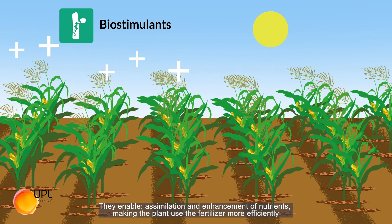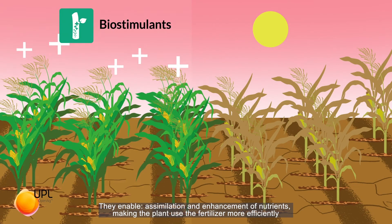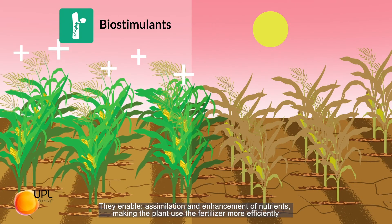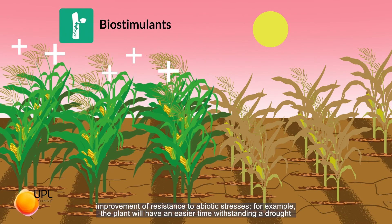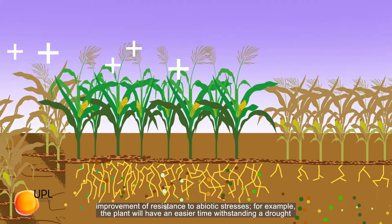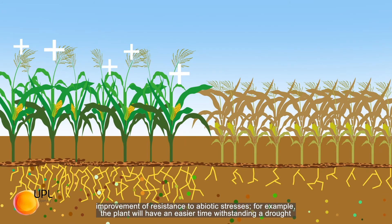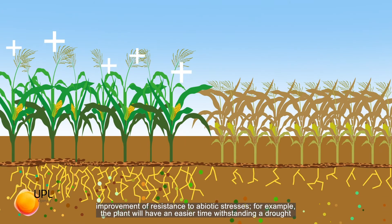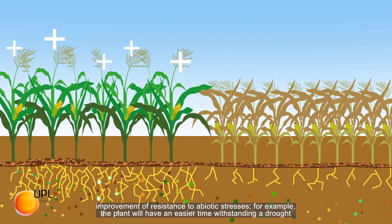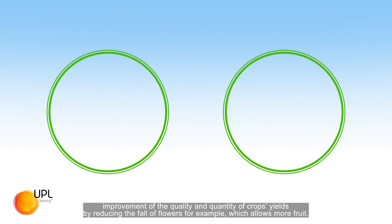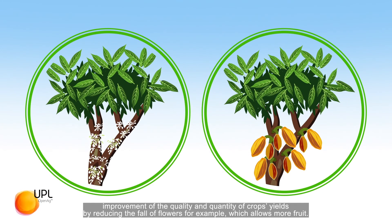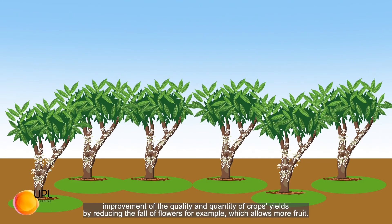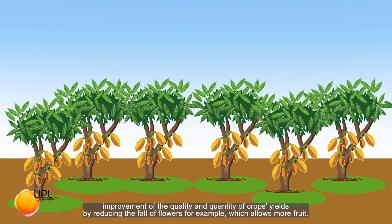Biostimulants stimulate the plant's natural physiological processes. They enable assimilation and enhancement of nutrients, making the plant use fertilizer more efficiently. They also improve resistance to abiotic stresses — for example, the plant will have an easier time withstanding a drought — and improve the quality and quantity of crop yields by reducing the fall of flowers, which allows for more fruit.